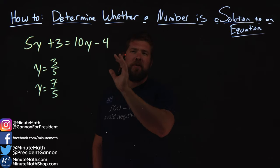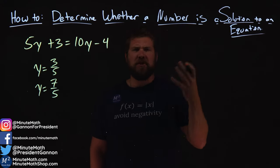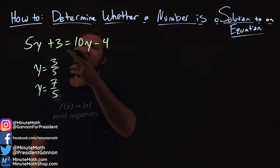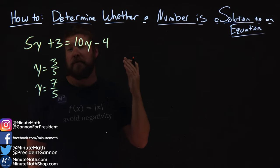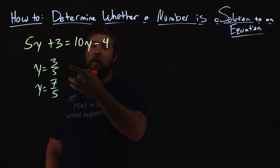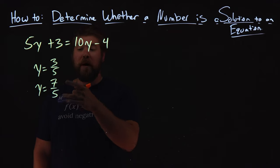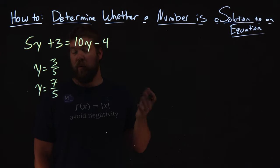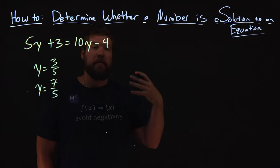We're given this problem here, and we're going to use this as an example on how to determine that. We're given 5y plus 3 equals 10y minus 4, and we have to determine if y equals 3 fifths, or y equals 7 fifths, or both, or neither, is a solution to the equation.